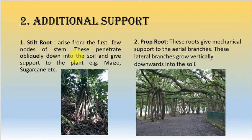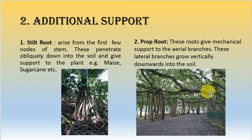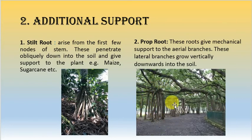The second modification of the adventitious root system is the stilt root and the prop root — both provide additional support. Stilt roots grow obliquely down into the soil and arise from the basal few nodes of the shoot system; they are seen in maize, sugarcane, and bottle palm. Prop roots give mechanical support to aerial branches, with lateral branches growing vertically downward into the soil, providing additional support to large canopy plants like the banyan tree.